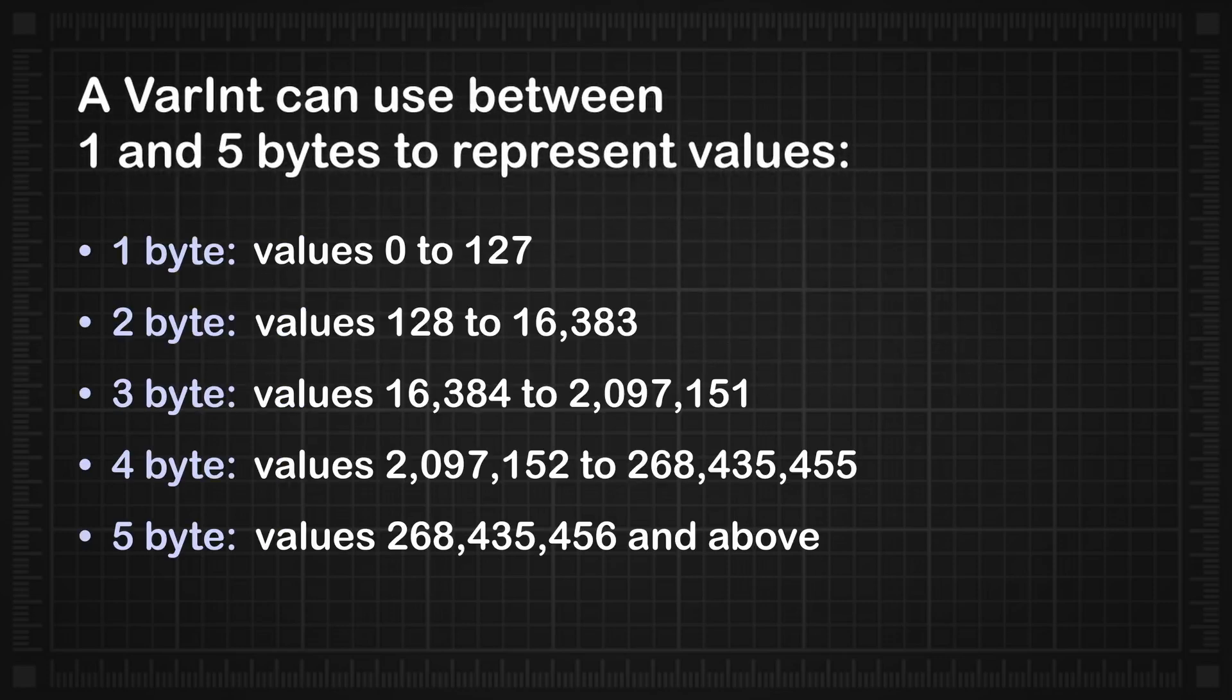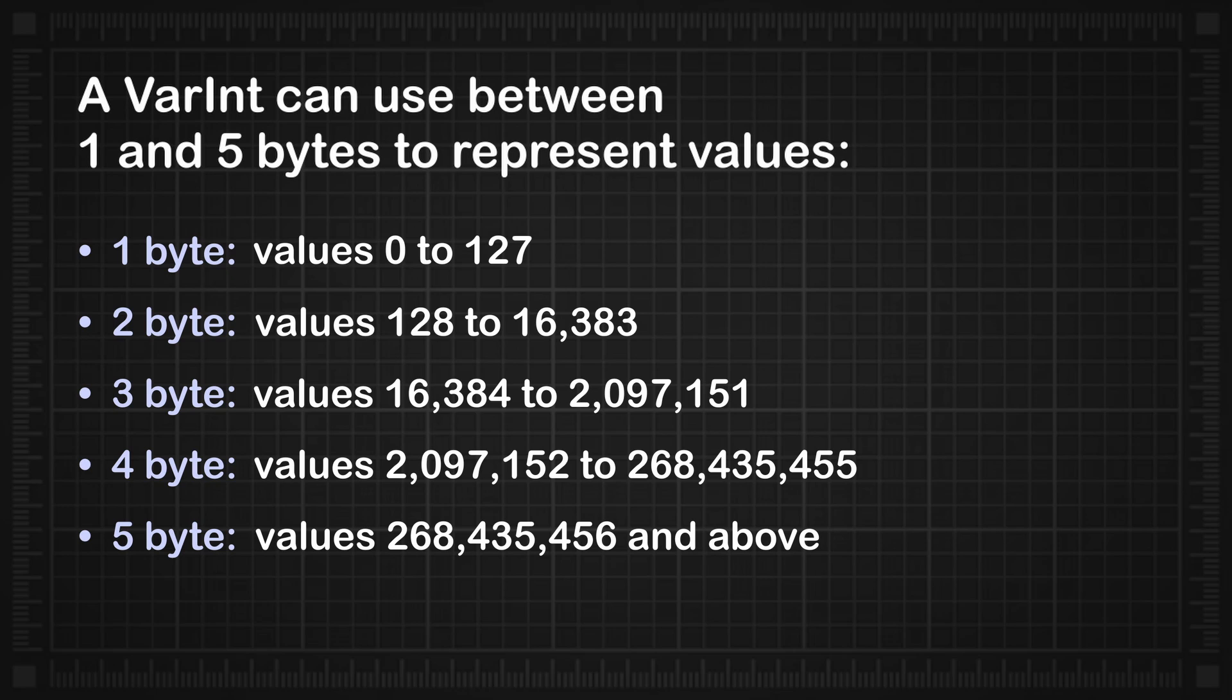1 byte: values 0 to 127. 2 bytes: values 128 to 16,383. 3 bytes: values 16,384 to 2,097,151. 4 bytes: values 2,097,152 to 268,435,455. 5 bytes: values 268,435,456 and above.